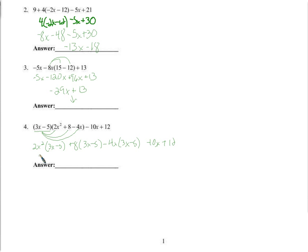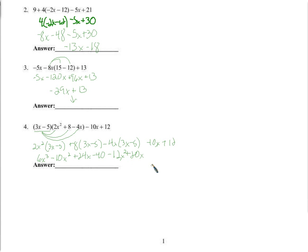Now, 2x² times 3x is going to be 6x cubed — remember x squared times x is x cubed. Distributing the 2x² to the negative 5 gives negative 10x². 8 times 3x is 24x. 8 times negative 5 is negative 40. Negative 4x distributed to 3x is negative 12x squared. Negative 4x distributed to negative 5 is positive 20x. Then minus 10x plus 12.